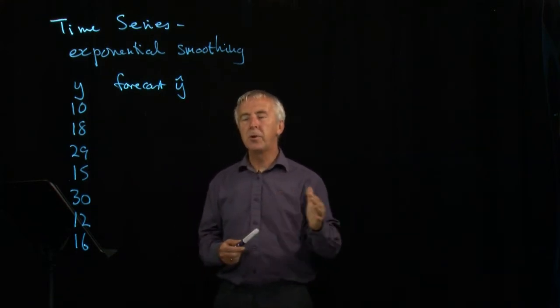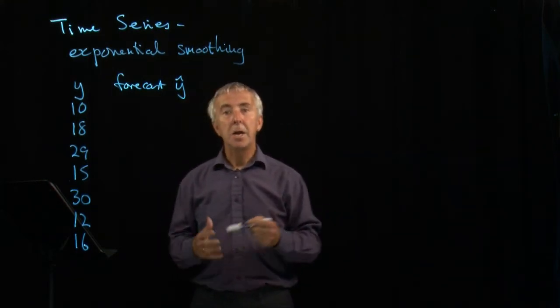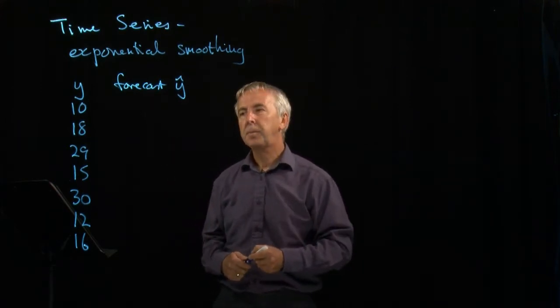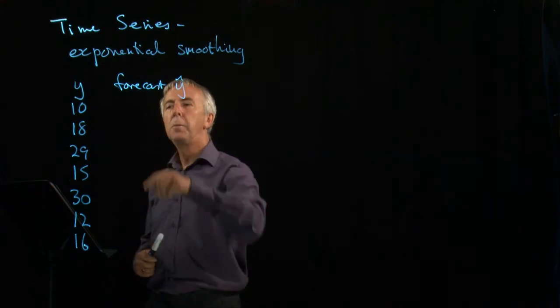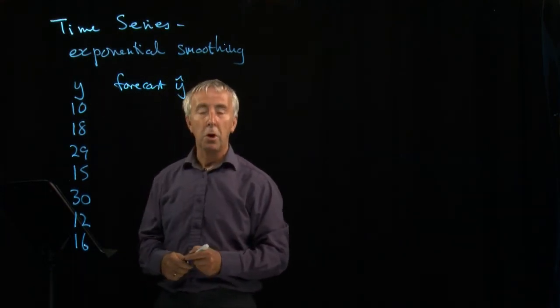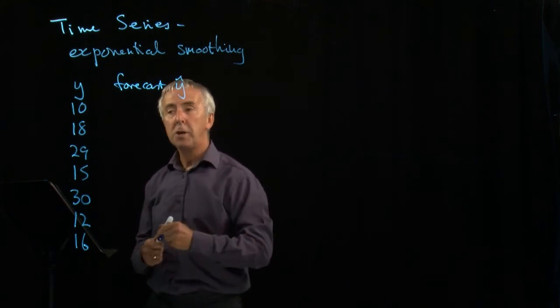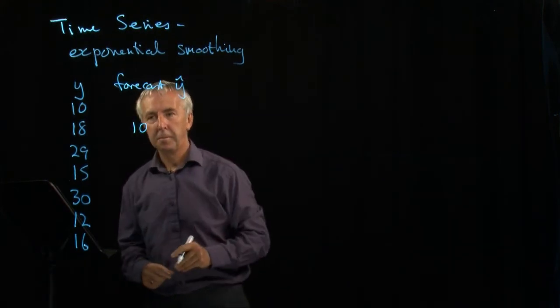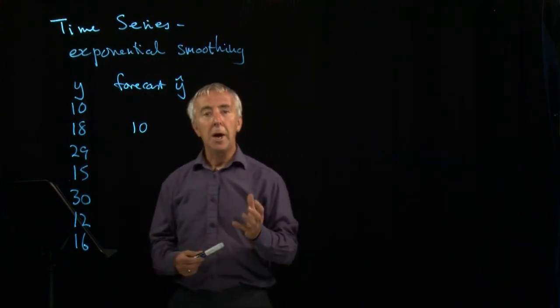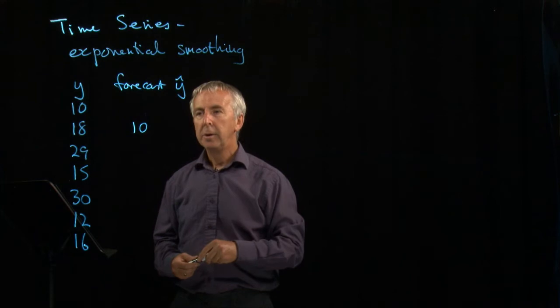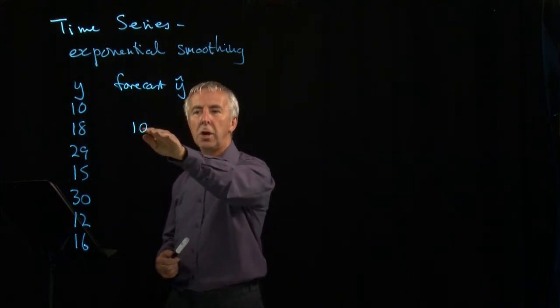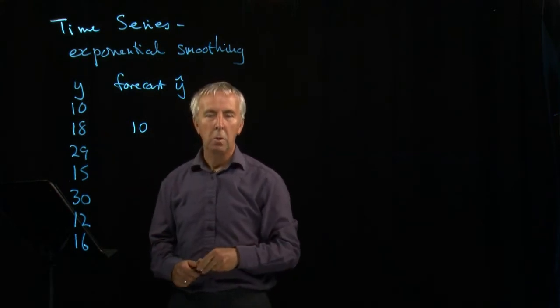At the beginning, for the first time period, I had no idea what to expect. The answer was 10. What do I then predict for period two? Well, all I've got to rely on is the fact that the previous result was 10, so I'm going to predict 10 for the next one. But what actually happened? I got 18. So my next forecast, I need to update this a bit. I need to adjust it because it was quite a bit low.